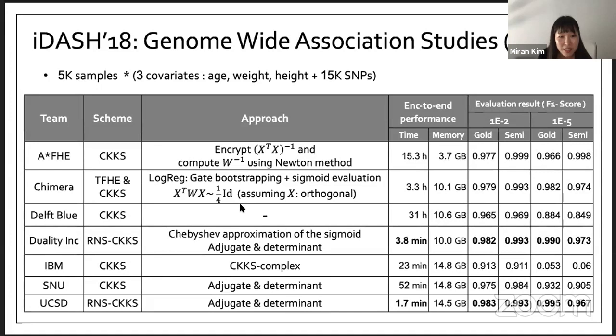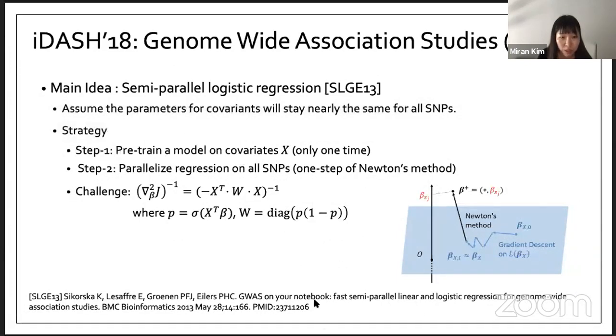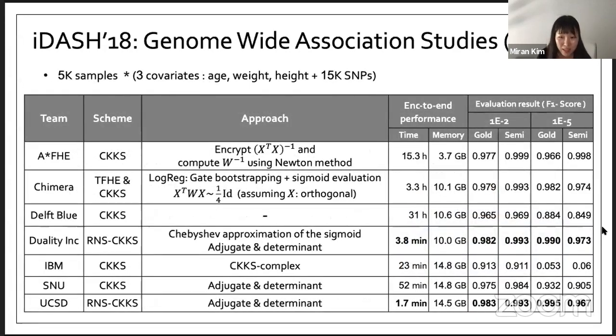Surprisingly, all the teams used CKKS scheme or its combination with BFV scheme. I think this is because we need real number computation over encrypted data, and as far as we know, CKKS is the best solution for the real number approximation of real number computation. The first step is to build a logistic regression model for covariate X. The first step is very similar to the last year 2017 iDASH task. These steps between the submitted solutions are very similar. They adapted the previous winning solutions of 2017.